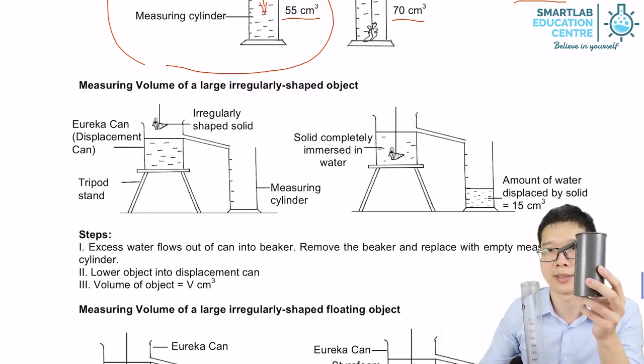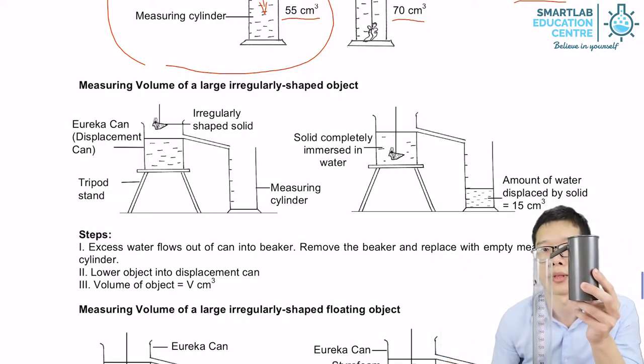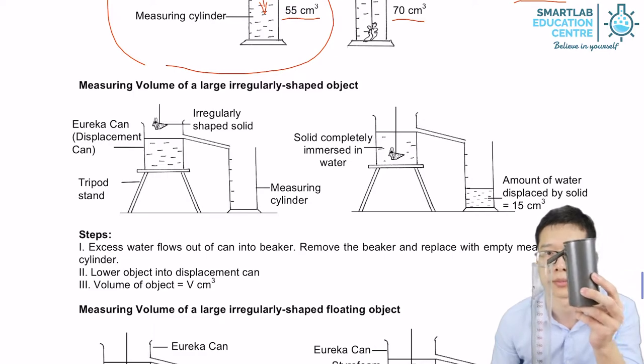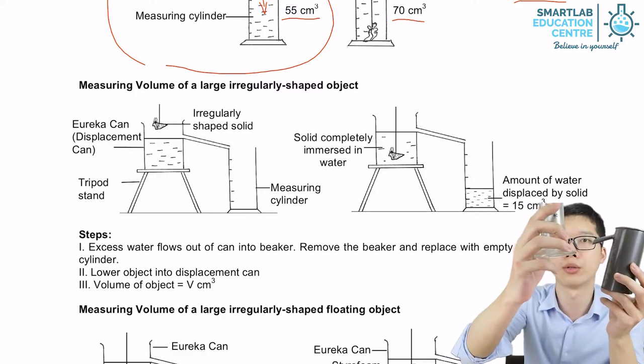So we are going to make a setup like this. And we submerge the stone into the Eureka can. So that water will leak out and then flow into this measuring cylinder.